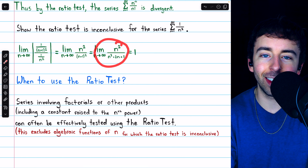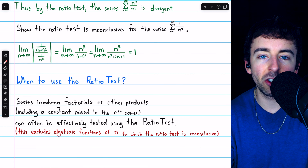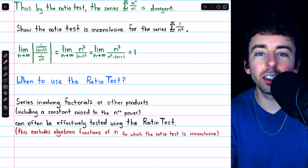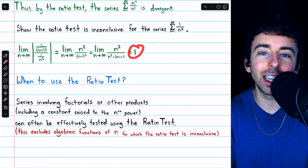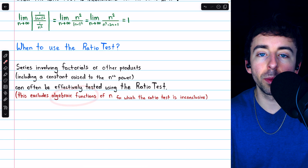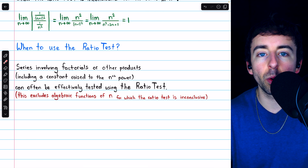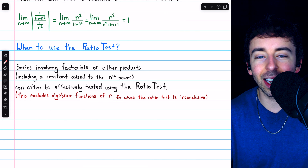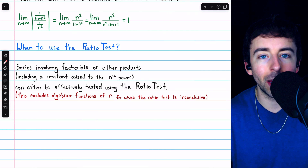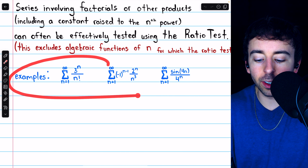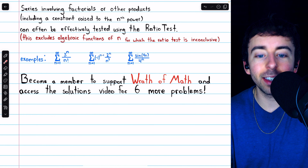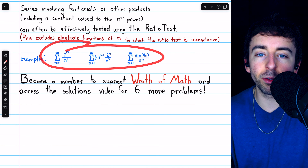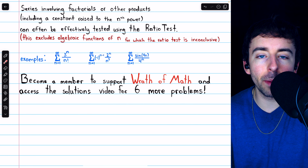When you apply the ratio test to an algebraic function, you're going to end up getting equal leading coefficients for polynomials of the same degree, and you'll get one. That's also true for algebraic functions where the numerator or denominator involves square roots — you're not dealing with polynomials, but you'll still get a limit of one. Here are some typical examples of series for which the ratio test would be useful. If you want more practice including solutions for these three series, consider joining Wrath of Math as a channel member.